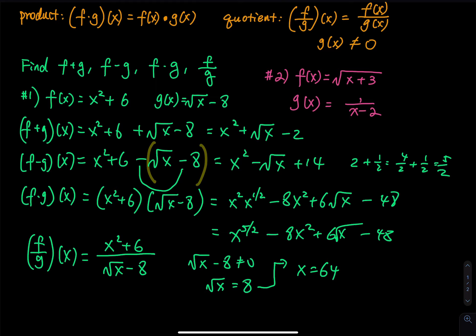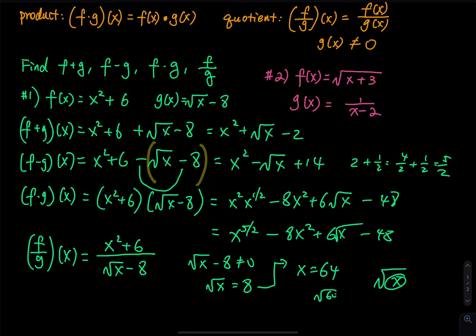I cannot use negative 64 because for the square root of x, x must be non-negative. So x equals 64: the square root of 64 is 8, and 8 minus 8 equals zero. So when you choose an x value, do not pick 64.